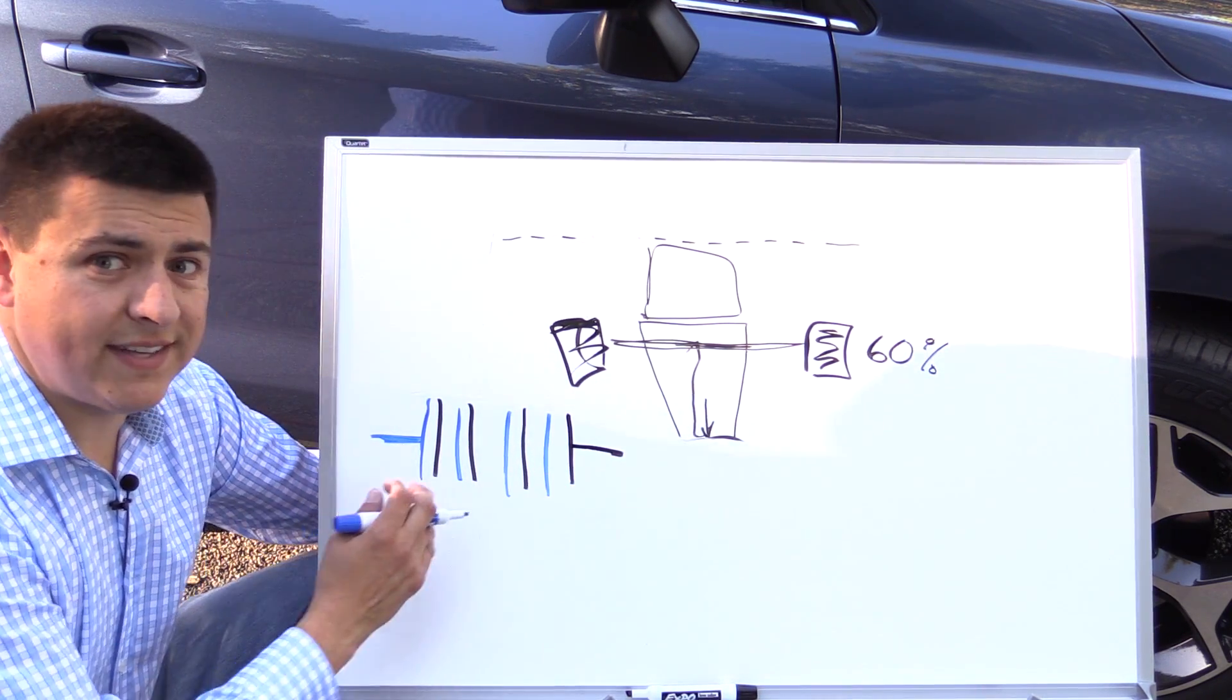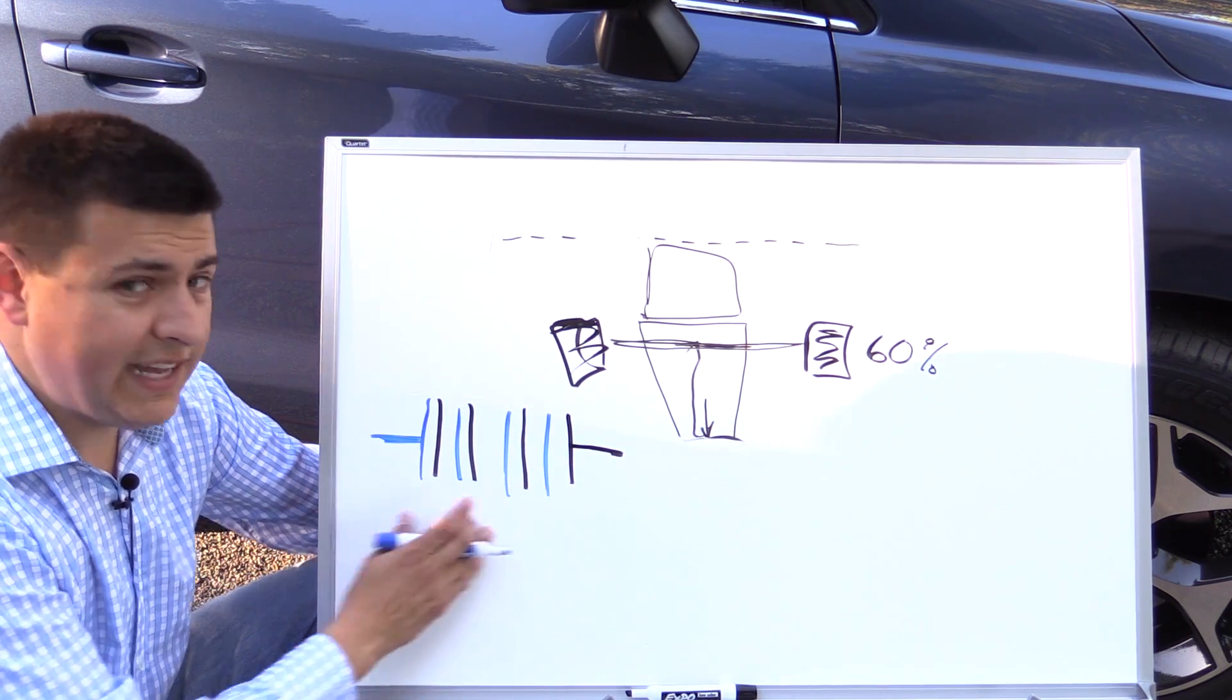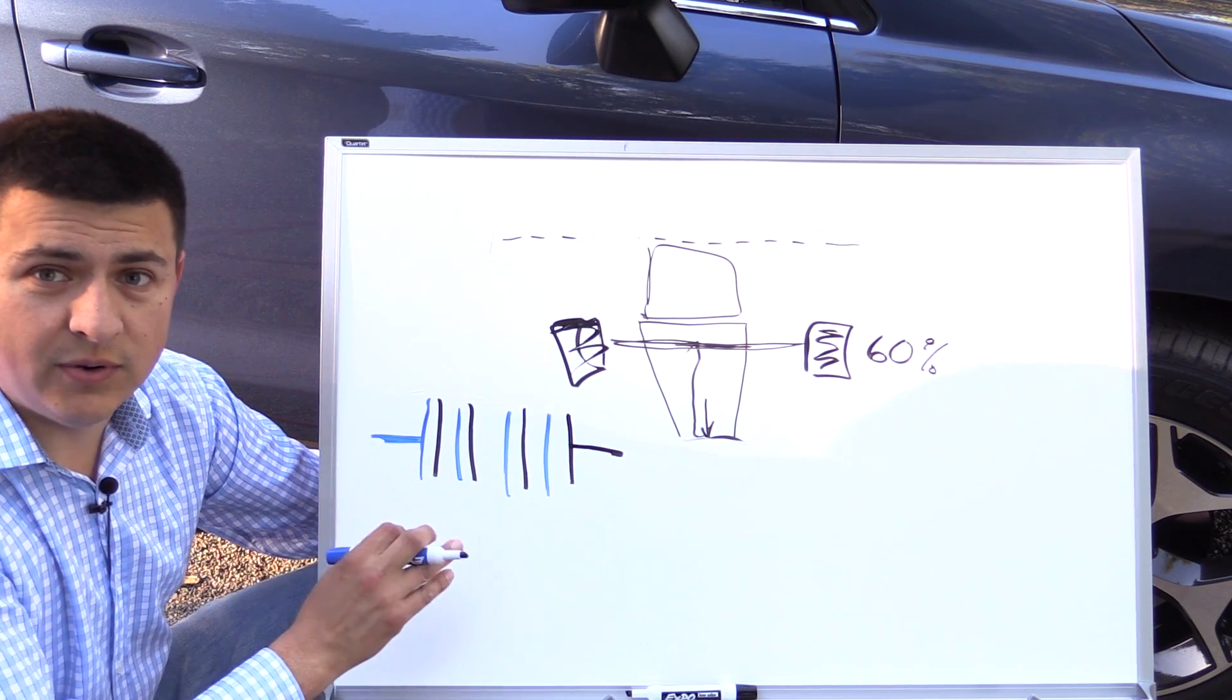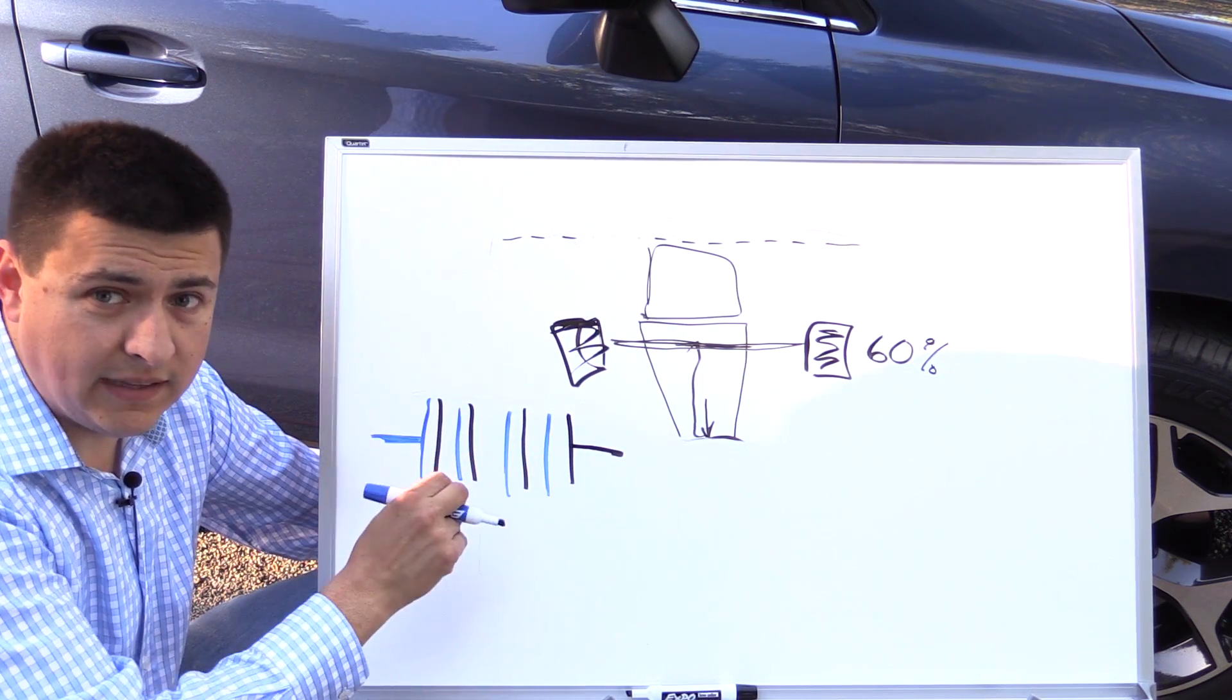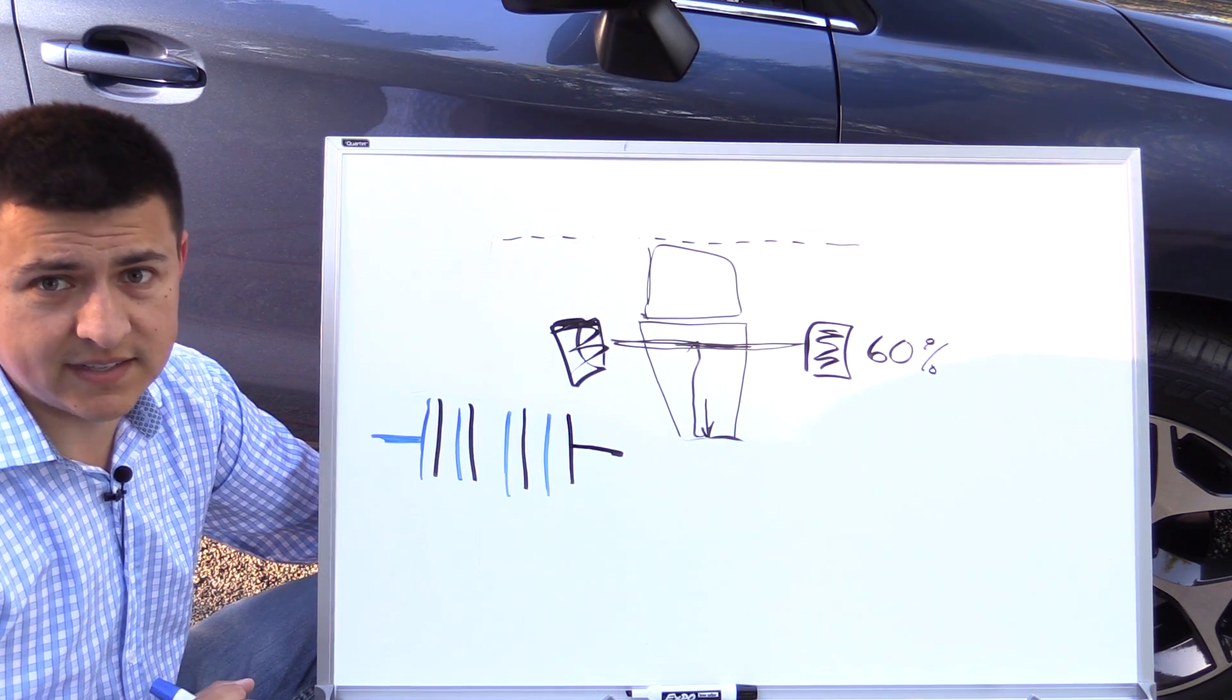Now the benefit to this system versus a viscous-type arrangement is that engagement is actually instant and it's also definite. So we have complete engagement in this setup—you can actually direct this clutch pack to completely lock up, and that's not possible in a viscous clutch.